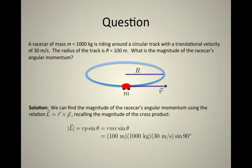The radius is 100 meters, the mass is 1000 kilograms, the velocity is 30 meters per second. This gives us 3 × 10^6 kg·m²/s, and that's our final answer.